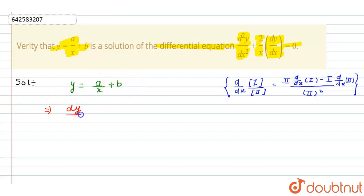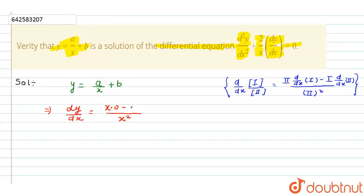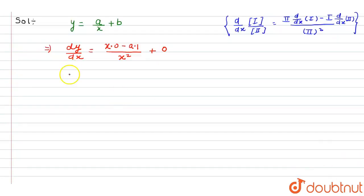Now differentiating the equation with respect to x, we get dy/dx. Using the quotient rule, we have x² in the denominator. The differentiation of a is 0 because it is a constant term, minus a times the differentiation of x which is 1, and b is a constant so its differentiation is 0. From here, dy/dx = -a/x².